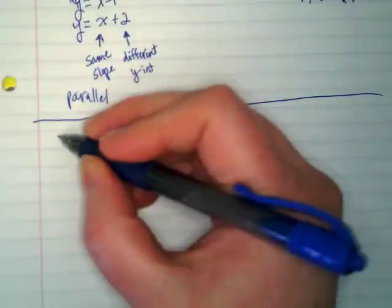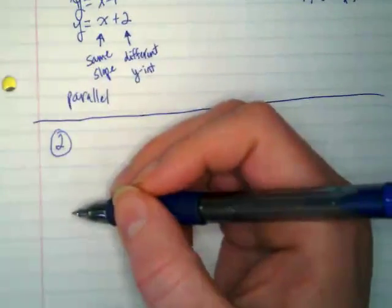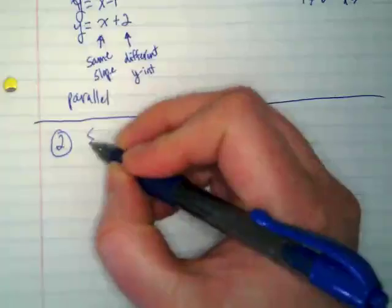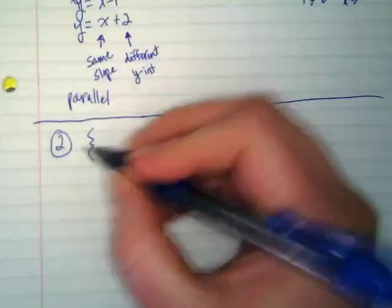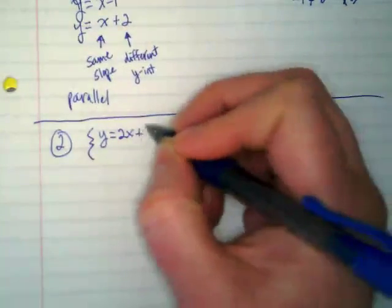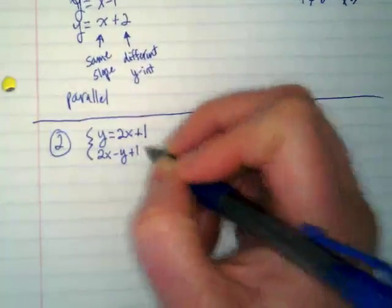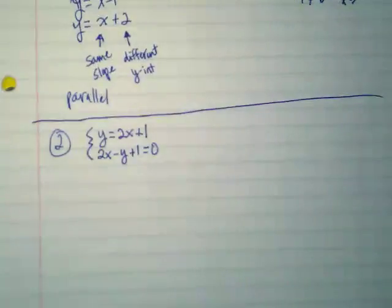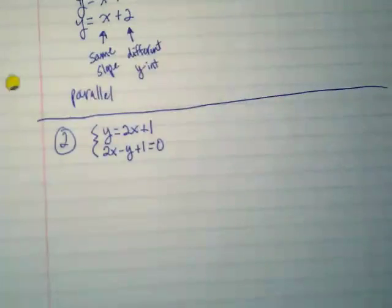Draw a line. We are going to do number two, the second way of getting a special system of equations. I don't think we've run across this yet in the work you guys have done. But there will be some like it today. Y is equal to 2x plus 1 and 2x minus y plus 1 equals 0.